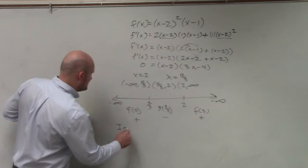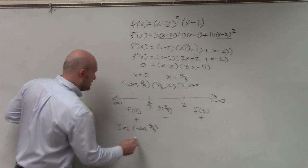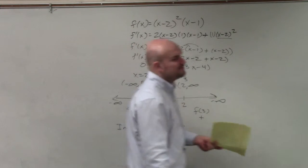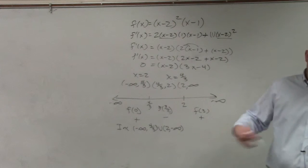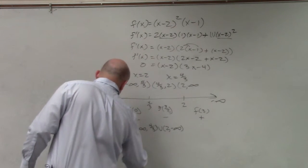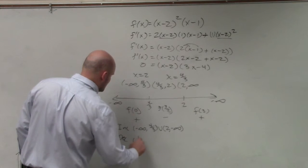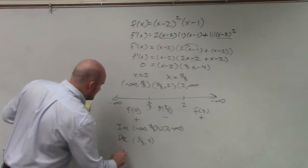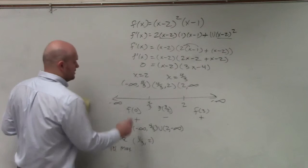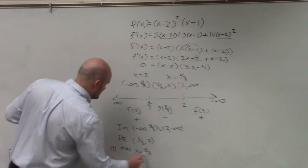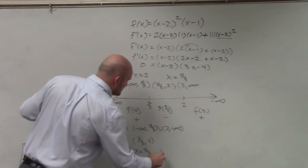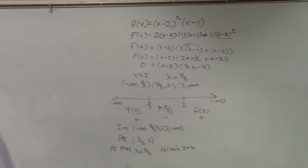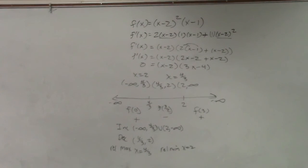So you can say that it's increasing on the interval of negative infinity to 4/3, and it's also increasing on the interval 2 to infinity. You don't have to use the union, but I didn't show union last time, so I figured I'd show it this time. You could say it's decreasing on the interval of 4/3 to 2. And you could say that it has a relative max at x = 4/3, and it has a relative min at x = 2. OK? Again...